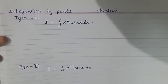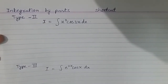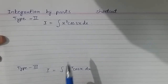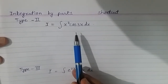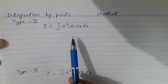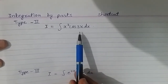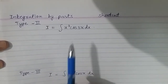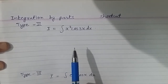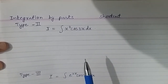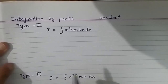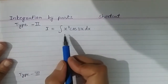Hello friends, in this video we'll talk about integration by parts using another approach — a shortcut compared to our traditional method. I'll call this the DI method, also known as the tabular method or Hindu method. Let us start with integration by parts.